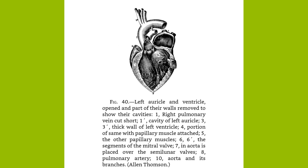The portal system of veins includes four large trunks, which collect the blood from the viscera of digestion: the superior and inferior mesenteric veins from the intestines, the splenic vein from the spleen, and the gastric from the stomach. These join together to form the portal vein, the only vein that breaks up into capillaries. This divides and ramifies through the liver; once it emerges, it does so as the hepatic veins. The whole is known as the portal circulation.